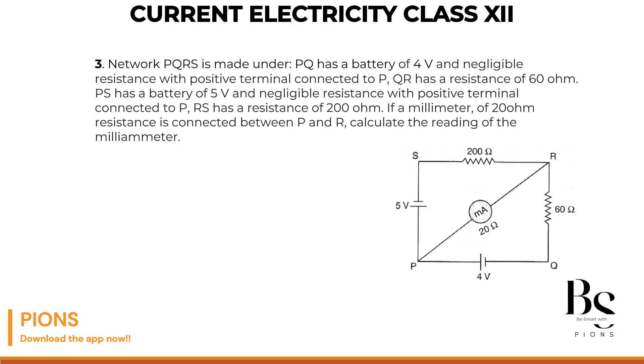Okay. So simply you have to find what is the current flowing across PR. Just to make it simple, let's draw a resistor over here. This is our resistor like this. So this resistor is connected and what's the resistance of this resistor? 20 ohm. This is our circuit.